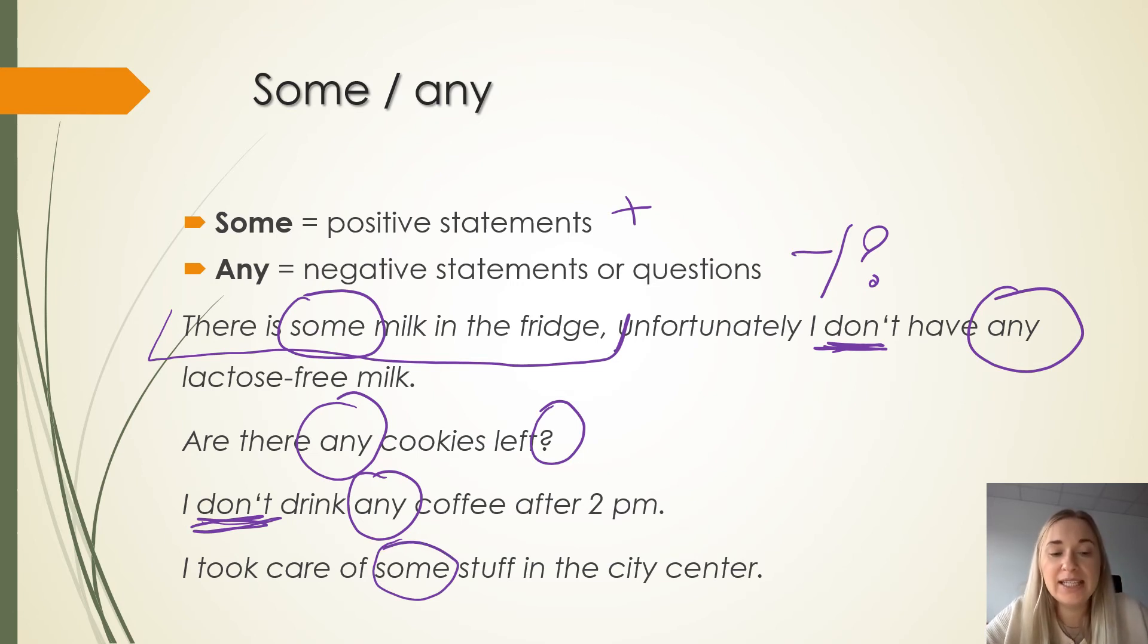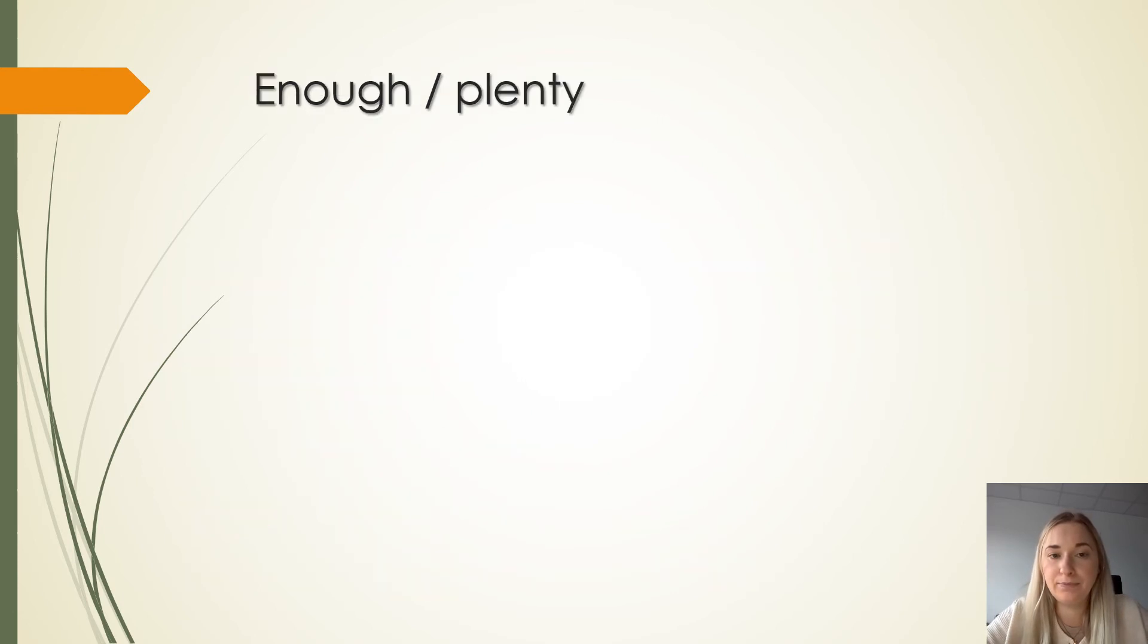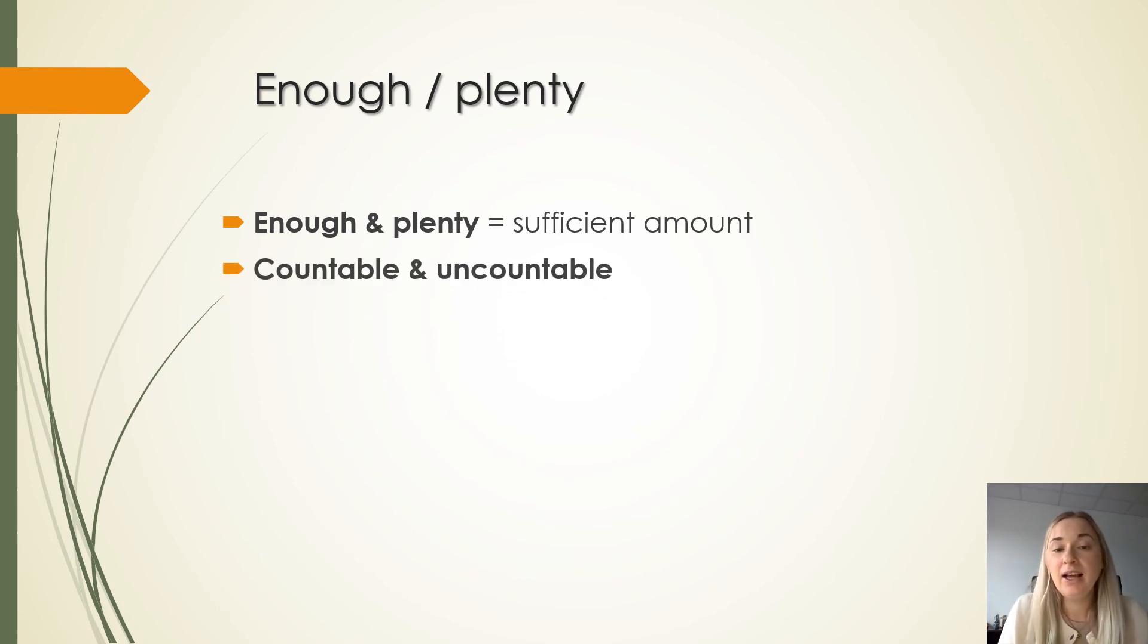Enough and plenty. Enough and plenty mean pretty much a sufficient, enough amount, enough of something, I have enough of something. They can be used both with countable and uncountable nouns.